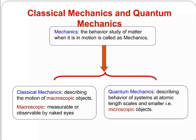Classical mechanics and quantum mechanics. What is the meaning of mechanics? Mechanics is the behavior study of matter when it is in motion. Classical mechanics describes the motion of macroscopic objects - measurable or observable by naked eye. Quantum mechanics describes behavior of systems at atomic scale and smaller, microscopic objects.